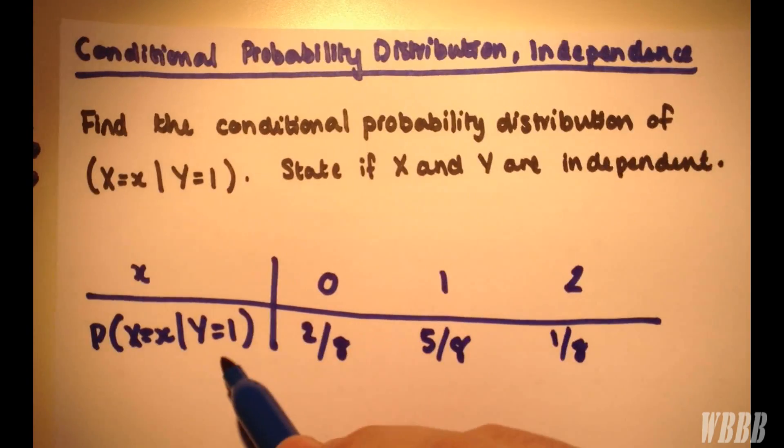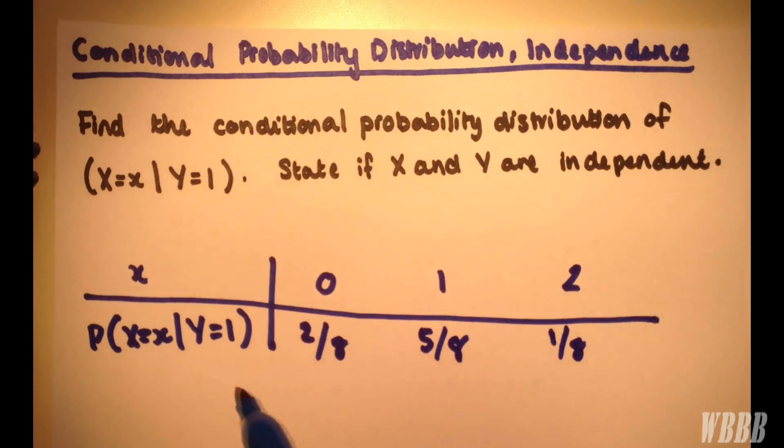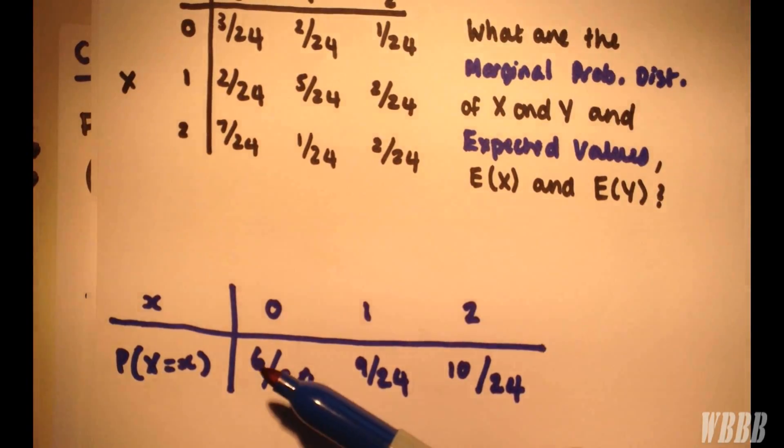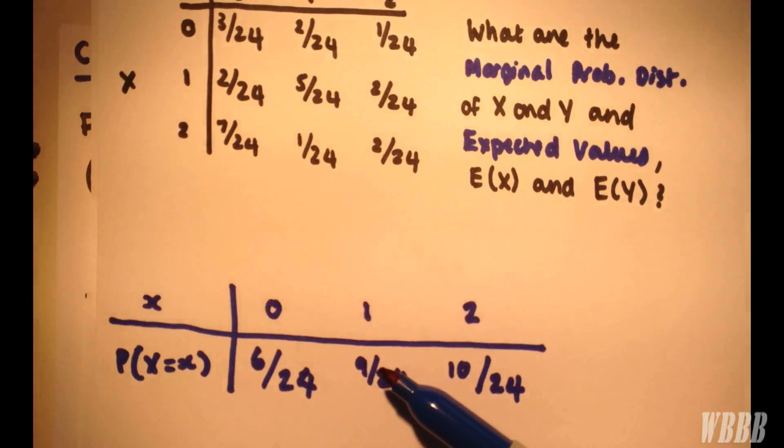then changing the Y value should have no effect upon the probability distribution of X. However, as you can see here, we should have 6 over 24, 9 over 24, and 10 over 24.